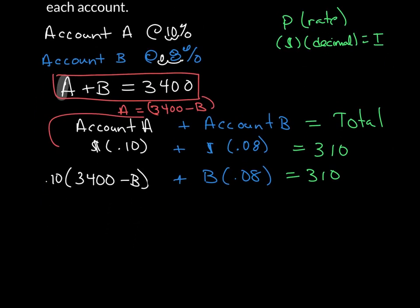So now my equation is all set up. What I have to do now is just go through and distribute, and we will find out how much is in account B. That gives me 340 minus 0.10B plus 0.08B is equal to $310.